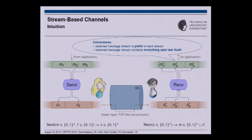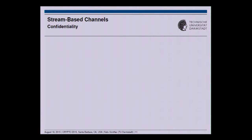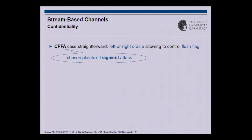For correctness, we require that whatever you receive is a prefix of what you sent — nothing else comes out — and everything put into the sender side up to the last flushing call should also appear on the receiver side. For security, we define indistinguishability under chosen plaintext fragment attacks, allowing fragments on the sender side using a left-or-right oracle where the adversary can additionally control the flushing flag.